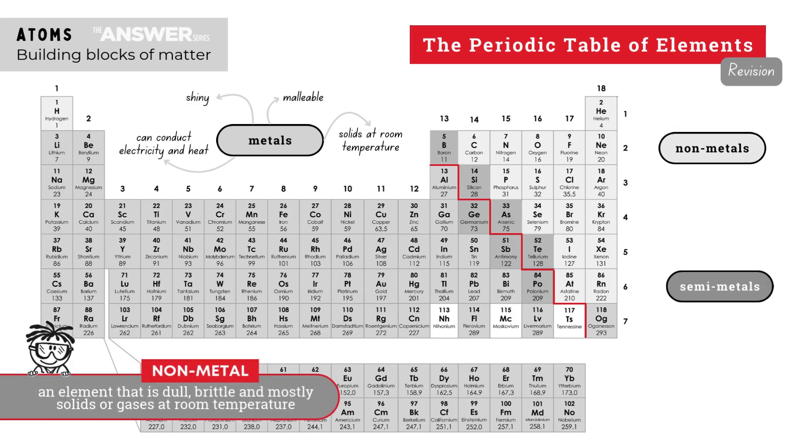On the right-hand side of this dividing line are all of your non-metallic elements. Non-metals are usually dull, brittle, and they may be solids or gases at room temperature and they're also poor conductors of electricity and heat.